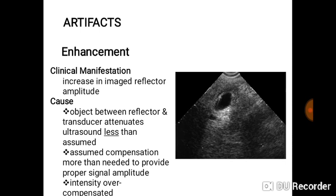The opposite of shadowing is enhancement. Shadowing happens with solid or calcified structures (like bones) that completely reflect the sound beam. On the other hand, when the sound beam meets a completely anechoic structure that transmits sound completely, the other side of that structure becomes brighter or enhanced. This is called posterior acoustic enhancement, and it happens mostly with anechoic cystic structures.